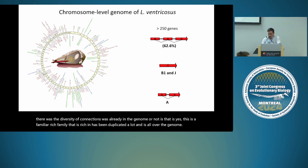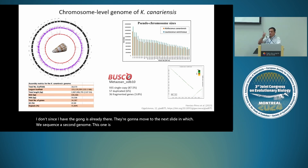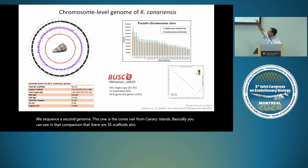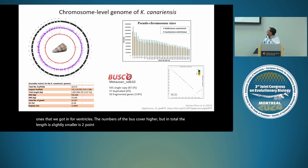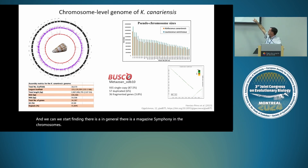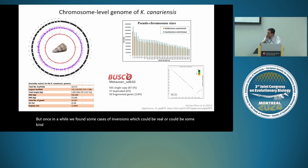We then sequenced a second genome — a cone snail from the Canary Islands — which also has 35 scaffolds but slightly smaller at 2.8 gigabases, with higher BUSCO scores. We find macrosynteny between the chromosomes, though the shorter chromosomes are more dynamic in terms of synteny, and we found some cases of inversions which could be real or assembly artifacts — we are still debating that.